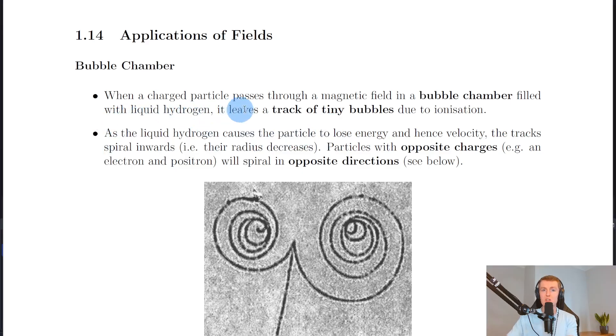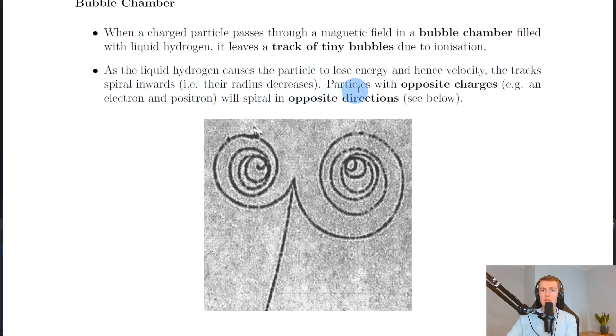When a charged particle passes through a magnetic field in a bubble chamber filled with liquid hydrogen, it leaves a track of tiny bubbles due to ionization. As the liquid hydrogen causes the particle to lose energy and hence velocity, the tracks spiral inwards. That is, their radius decreases.